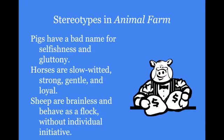We're going to be looking at the ideas of stereotypes in Animal Farm. Pigs usually have a bad name for the idea of selfishness and gluttony — they seem to have everything. Horses are going to be shown as slow-witted but also strong, gentle, and loyal — these are the hard workers on the farm. Sheep are brainless and behave as a flock without individual initiative, representing people who just go along with whatever society tells them to do without question.